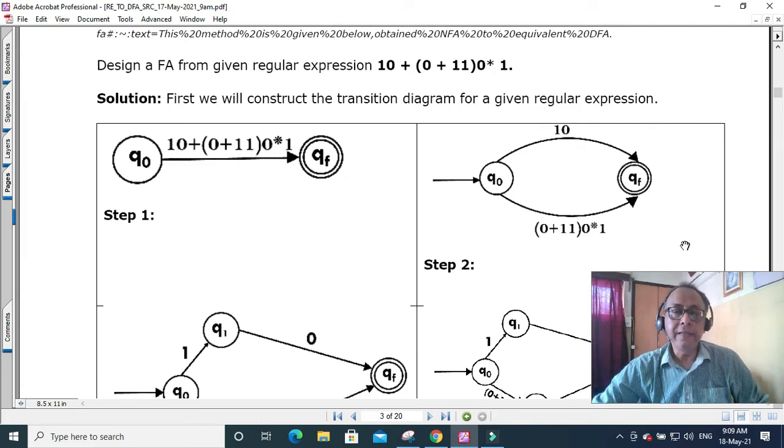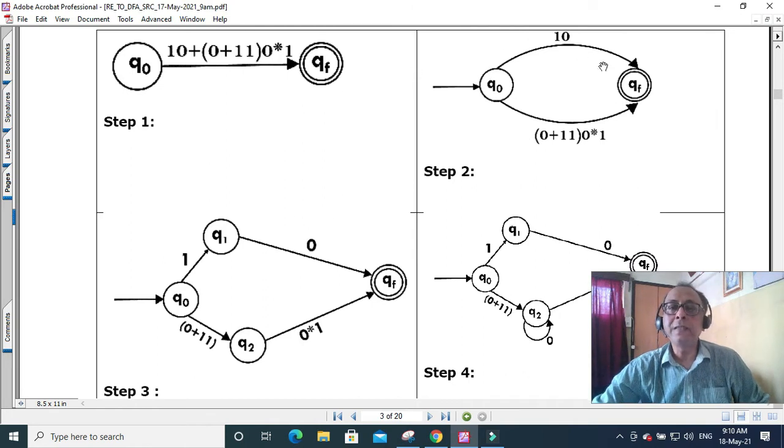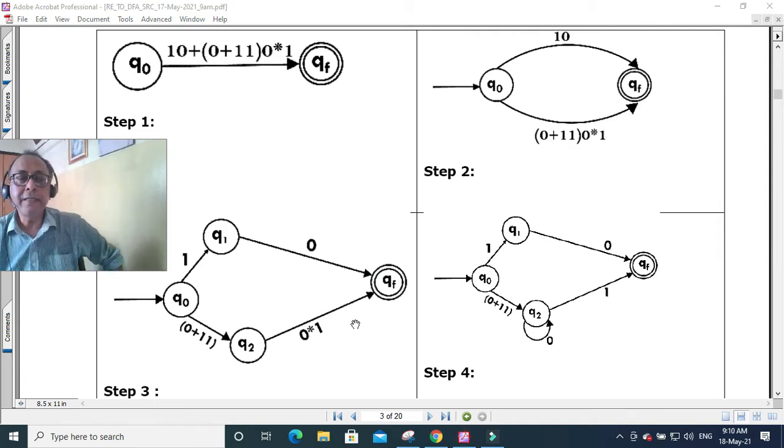Then the next stage, this 10, we break it up by another state 1 and 0. So intermediate we add an extra state q1, that is we make it 1 then 0 to q1. Similarly, this is a concatenation of two strings. So I will make q0 go (0 + 11) to another state q2 and from there 0*1. So see from there we come to this. Then you see here,